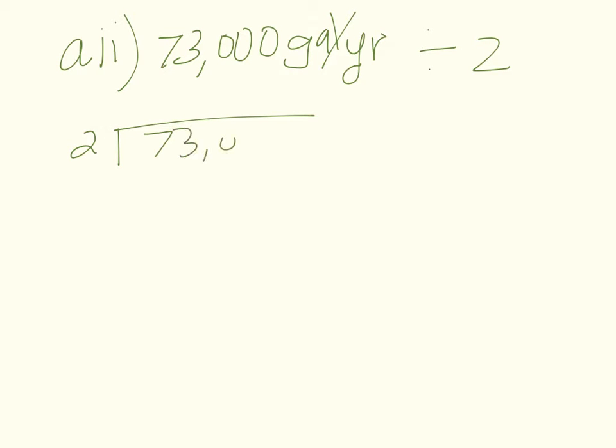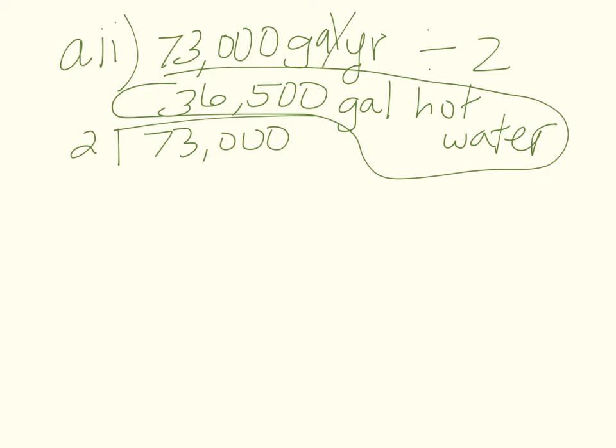Part AII. It's asking about the annual cost of the electricity for the family showers. Calculate it assuming that 2.5 gallons per minute of the water is used from hot water, so the cold water doesn't take electricity. If they're using per year 73,000 total and half of that is hot, we're just going to divide it by 2 to get our hot water. Go ahead and pause the video and solve this long division problem.